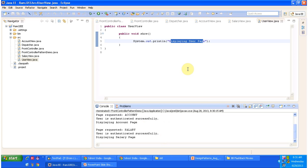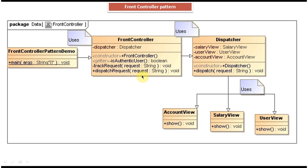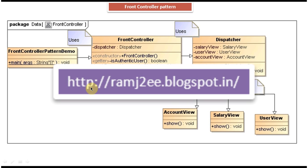This is the sample code for the front controller design pattern. I have created a blog called romj2.blogspot.in where I have put all my sample code. You can log into my blog and see the sample code. This is about the front controller design pattern implementation — thanks for watching, bye.